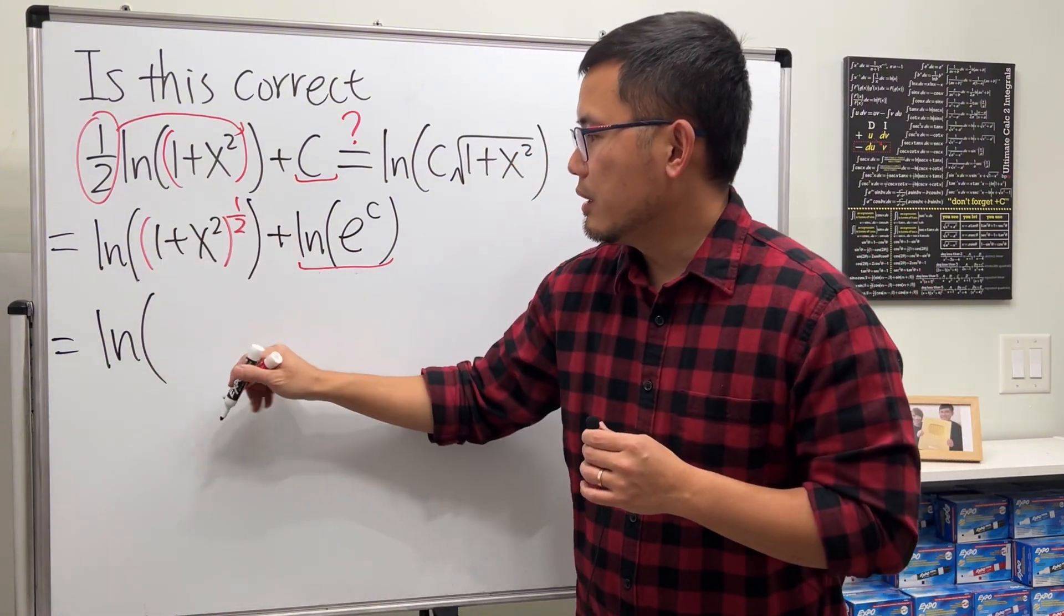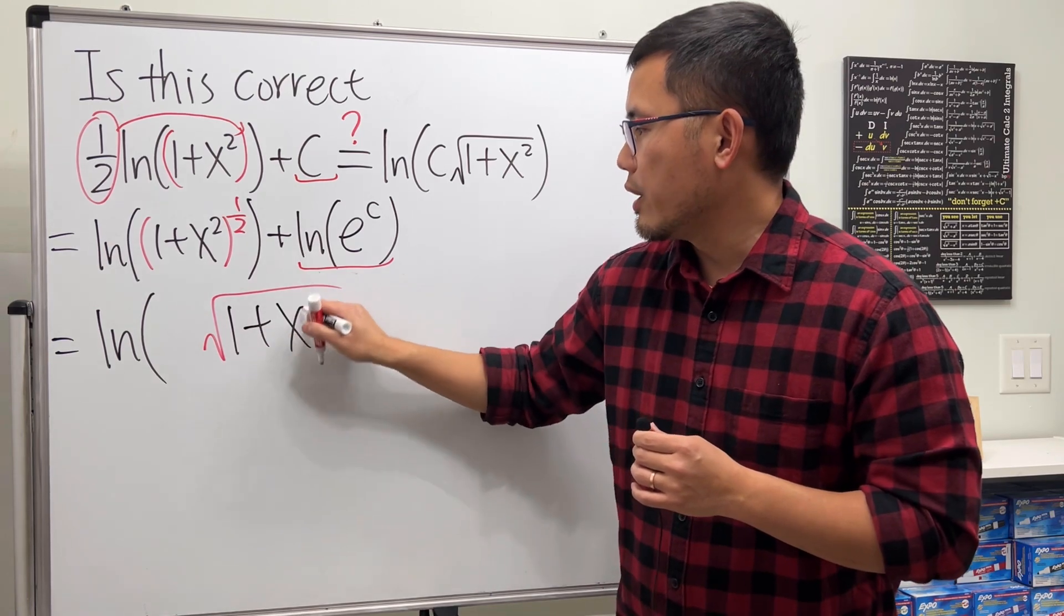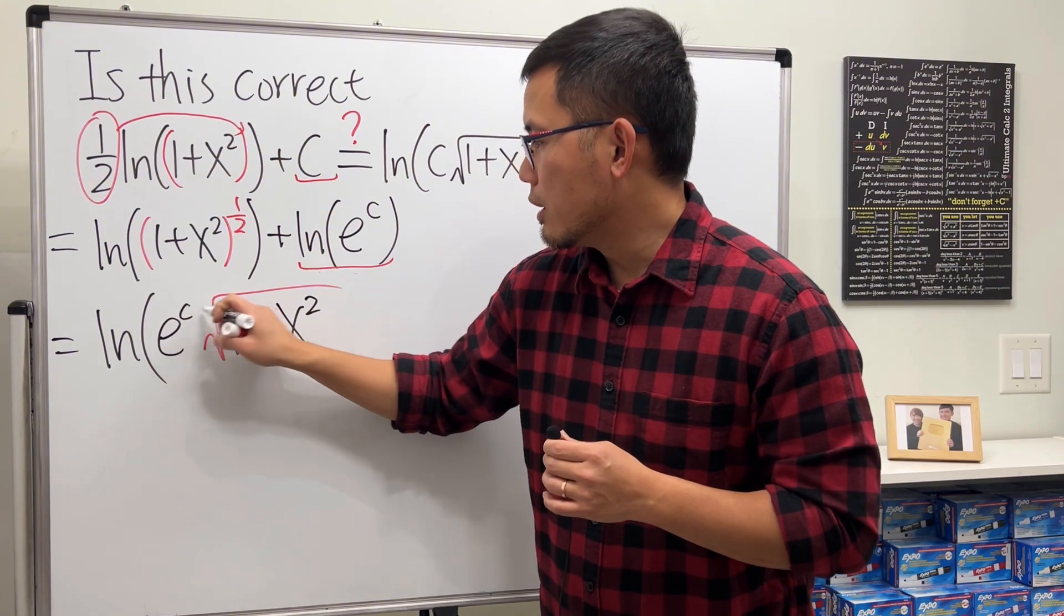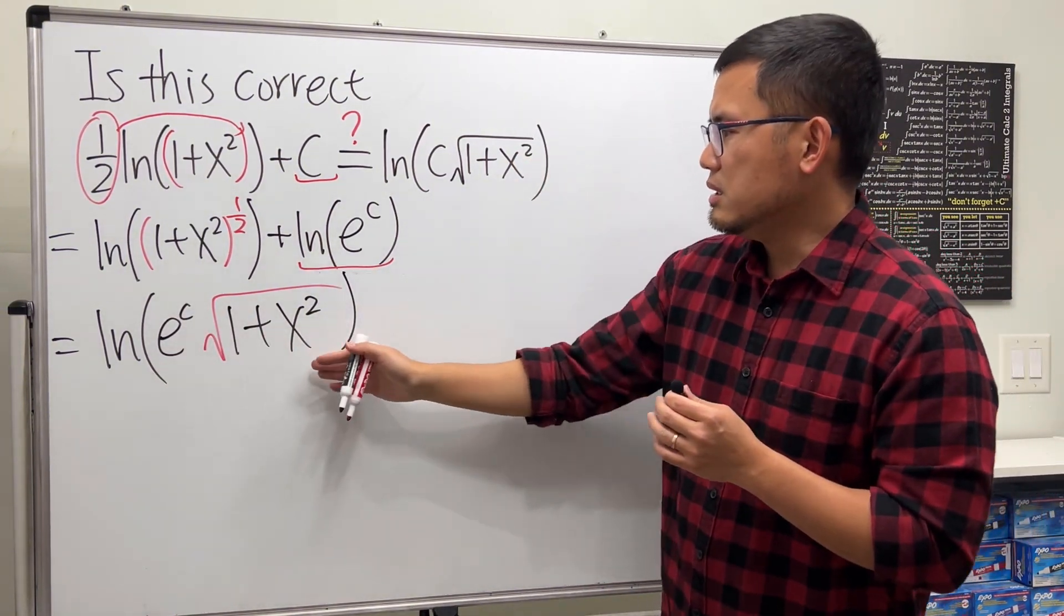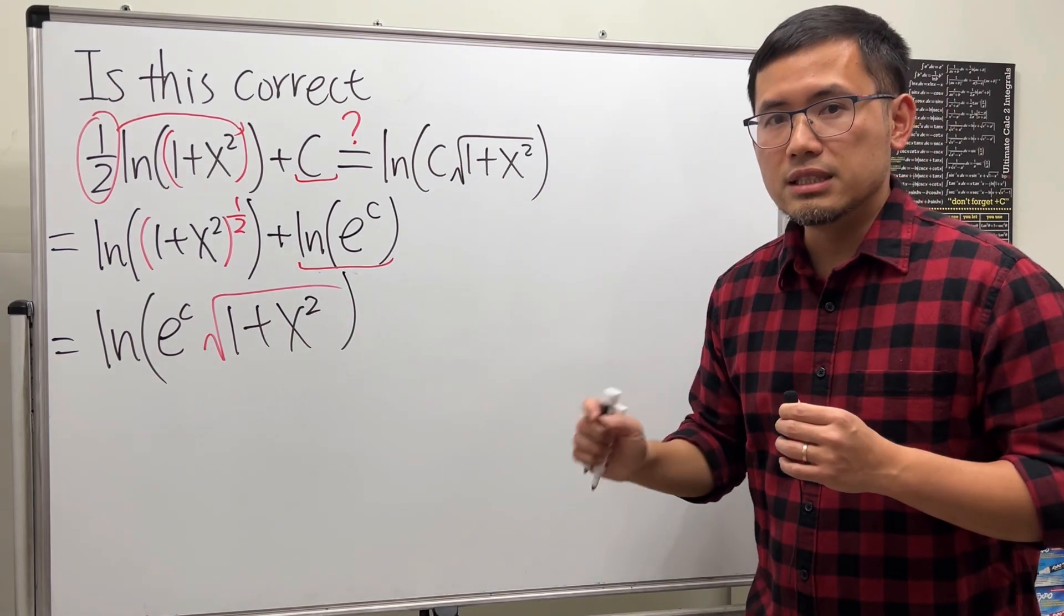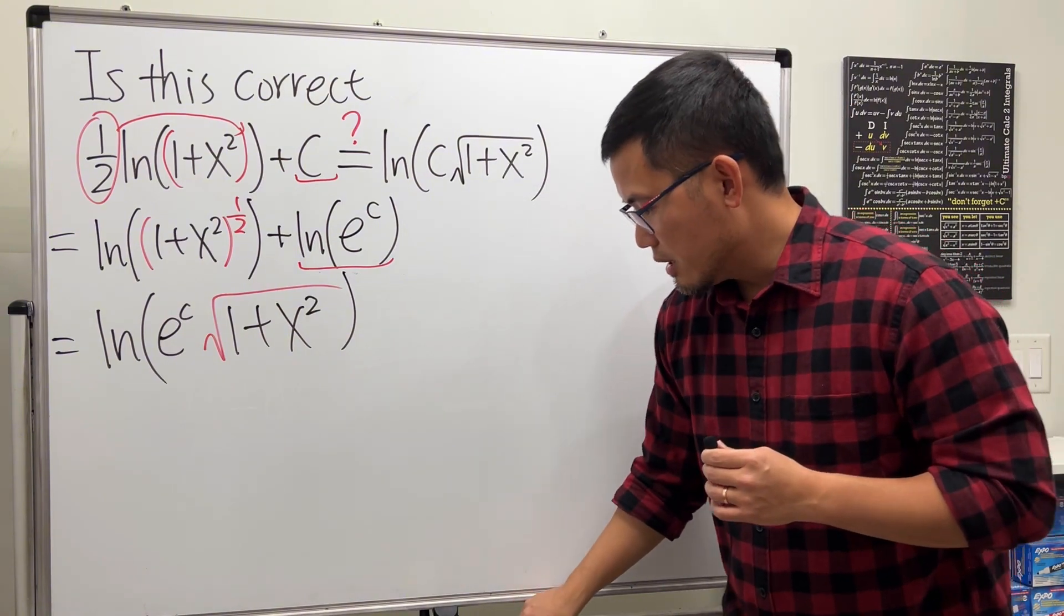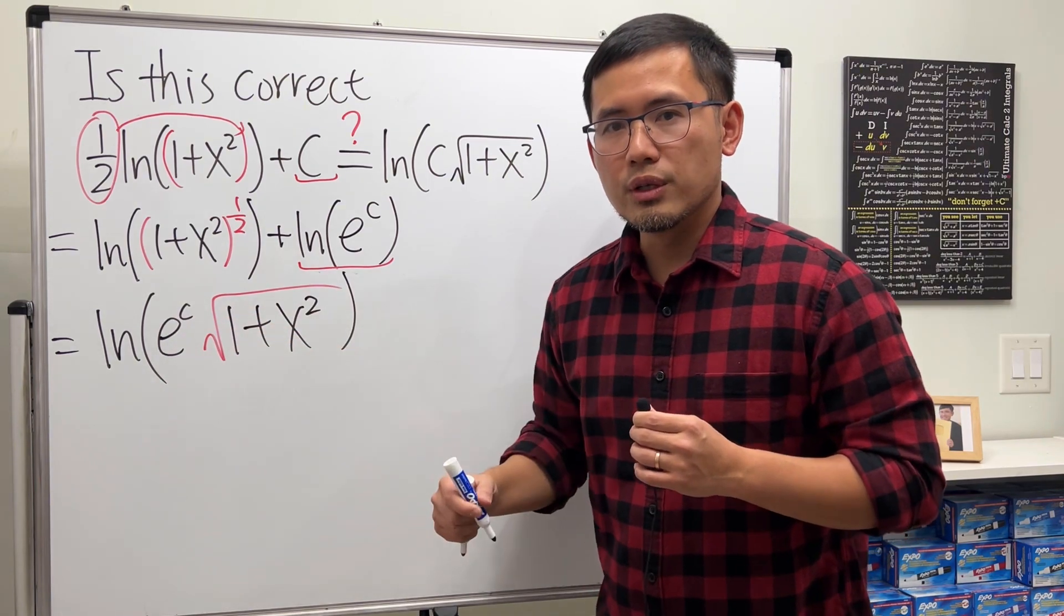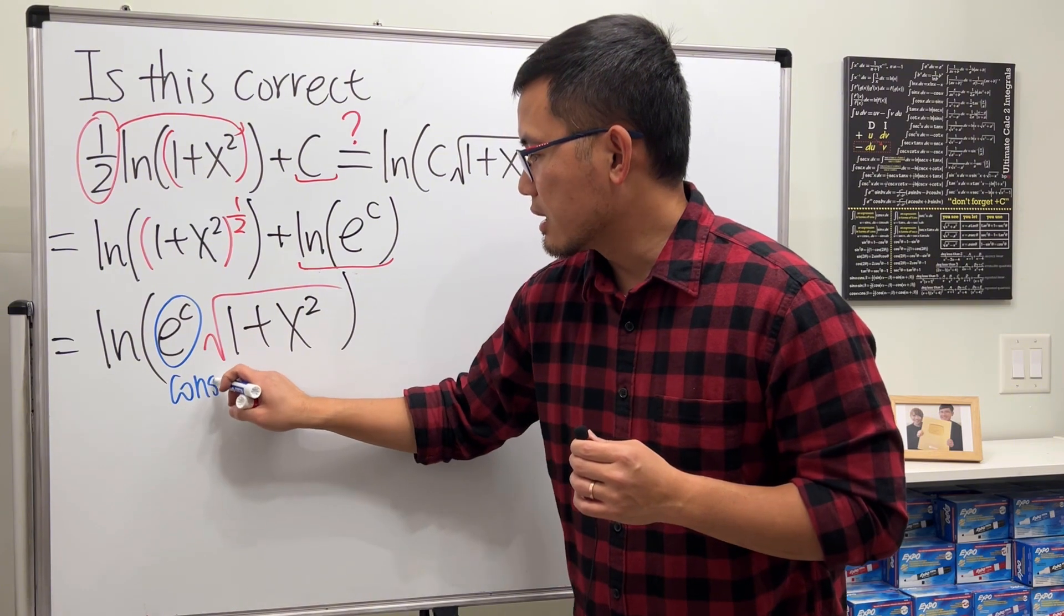This right here is the square root. Let me write it down: square root of one plus x squared, and then inside is e to the c's power like that. So now you're wondering, this is not the same as that. Well, I told you it's not if you are looking at this as an equation. But if you're doing integrals, then we know c is a constant, e is also a constant, and together this right here is just another constant.